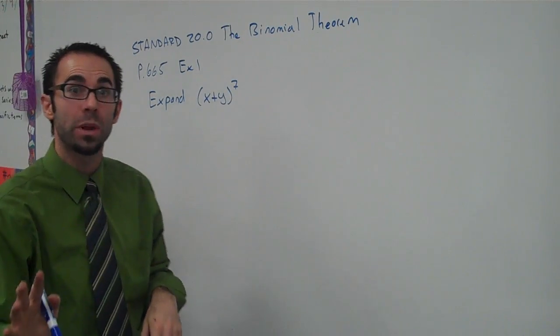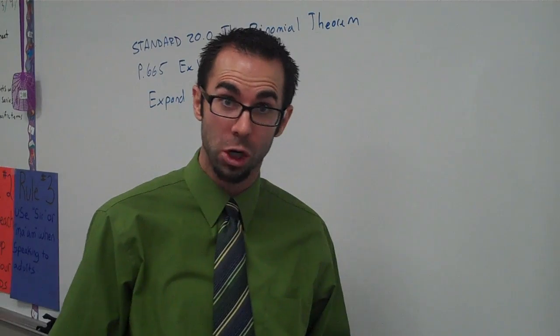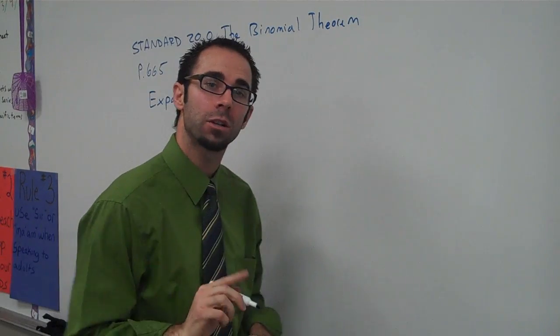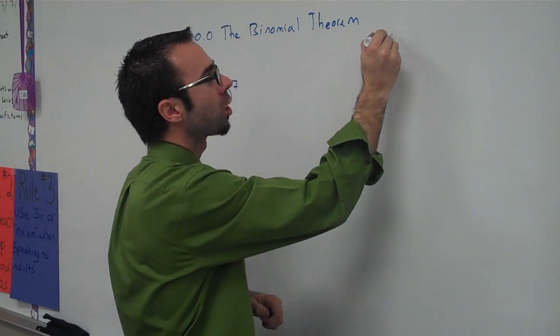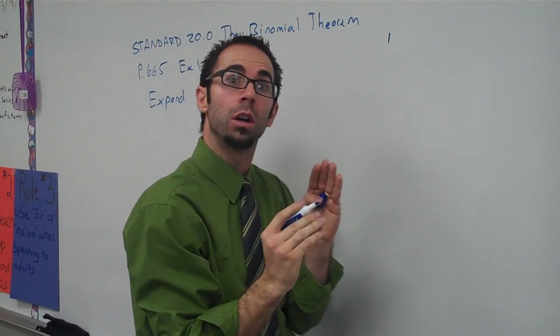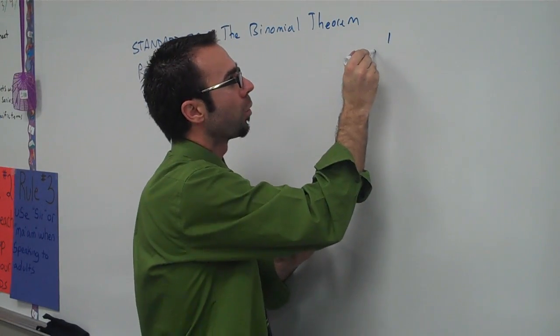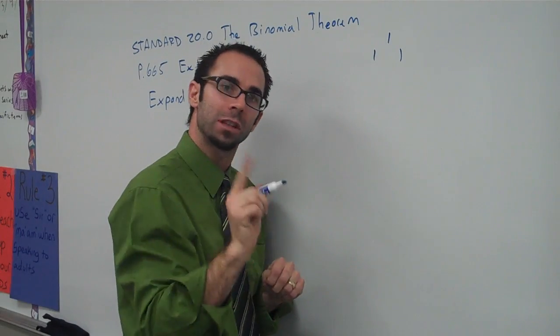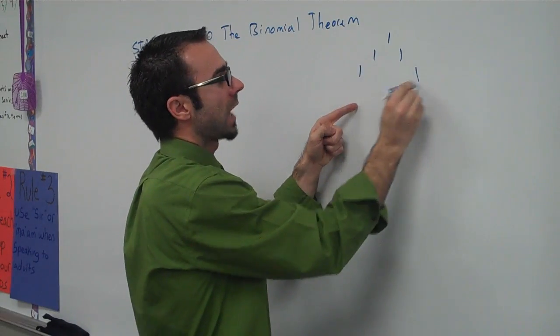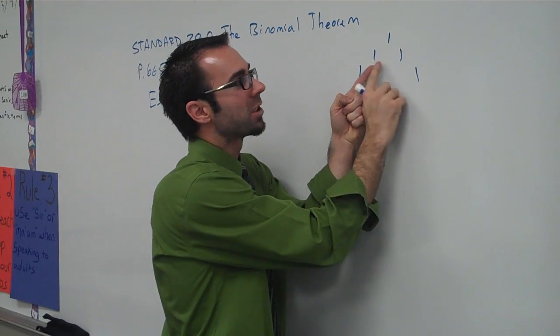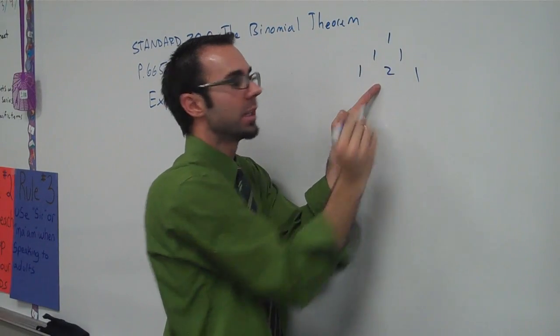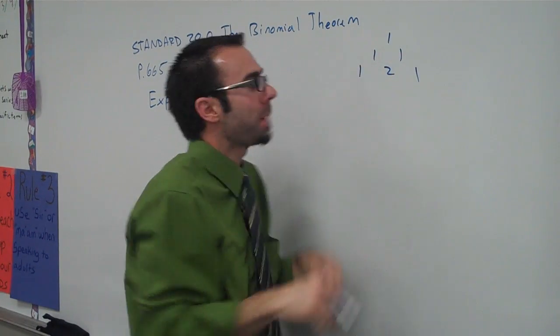Well, anytime that we expand, we have to know Pascal's Triangle. So check this out. Pascal's Triangle goes as follows. You start with the one on top, and then ones are always going to go on the outside, so we put one and one. Now check this out. One's going on the outside, but if you want to know what goes in the middle, we're going to add these two. One plus one is two.